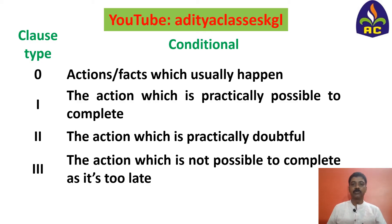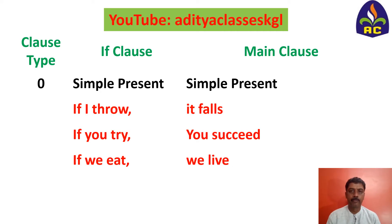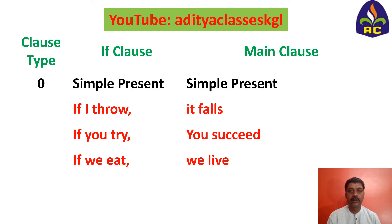Now let us look into some examples. Zero conditional explains about the actions which usually happen — they are facts. In the if clause we use present simple, and in the main clause also we use present simple, like throw, fall, try, succeed, eat, leave. These are present simple verbs. For example: if I throw, it falls. That is a usually happening fact.